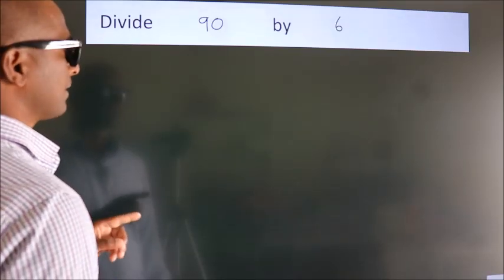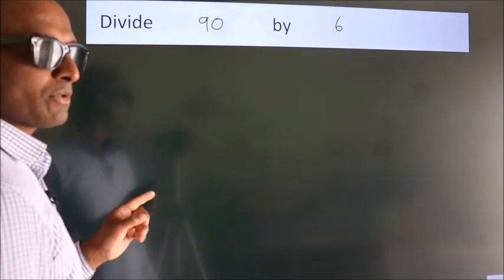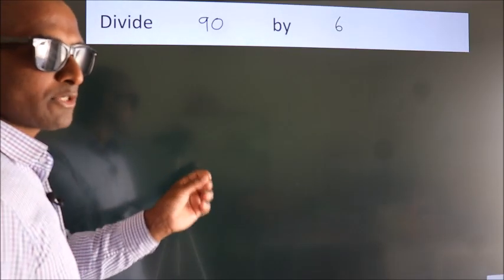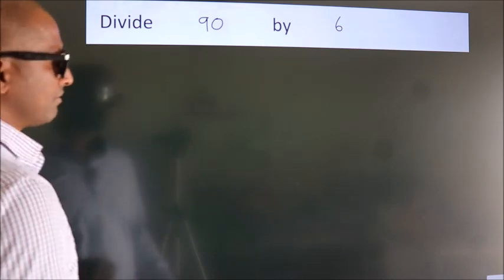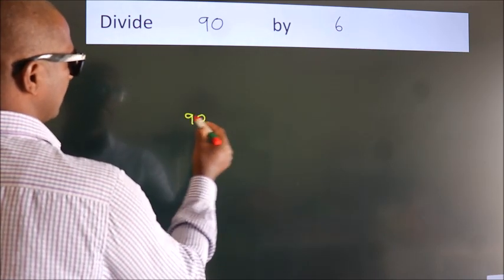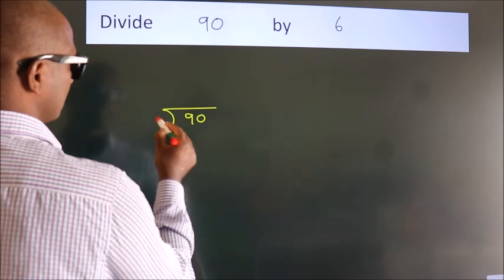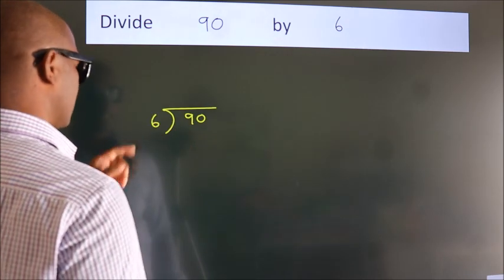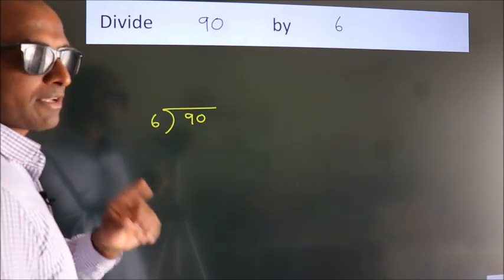Divide 90 by 6. To do this division, we should frame it in this way: 90 here, 6 here. This is your step 1.